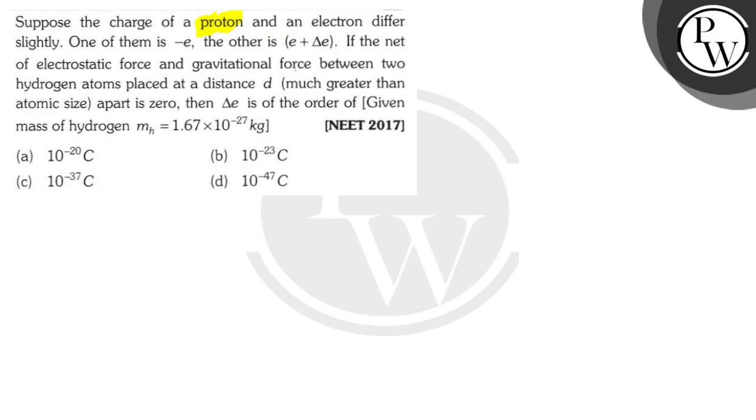suppose the charge of a proton and an electron differs slightly. One of them is -e, the other is (e + Δe). If the net of the electrostatic force and gravitational force between two hydrogen atoms placed at a distance of d apart is zero,